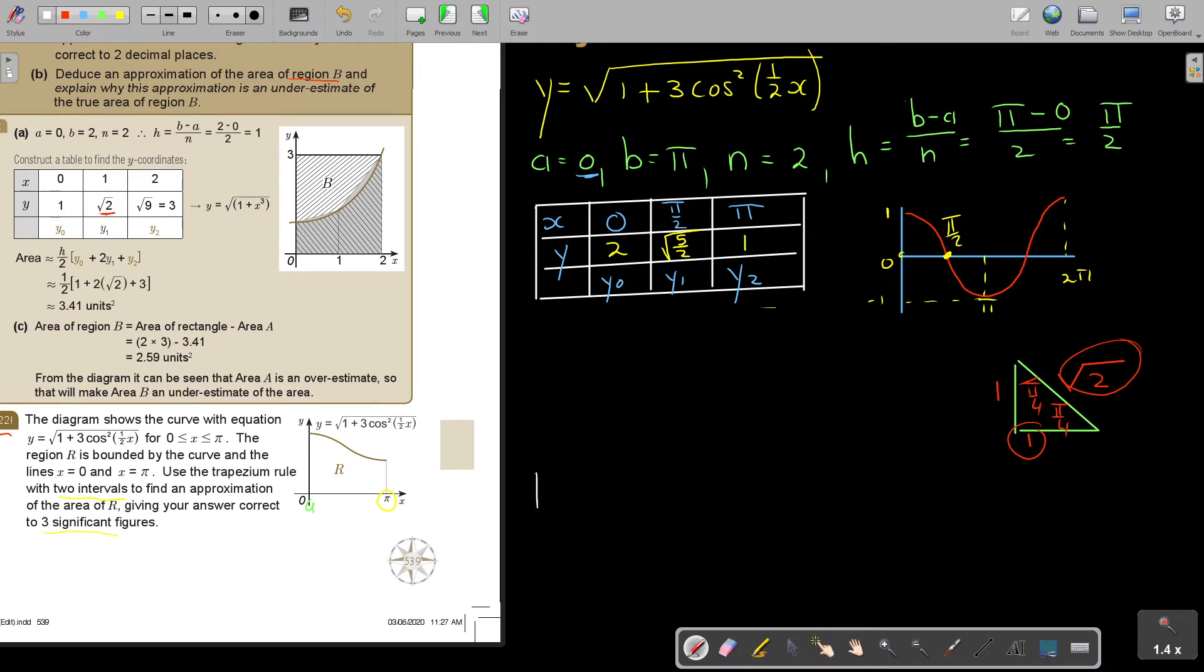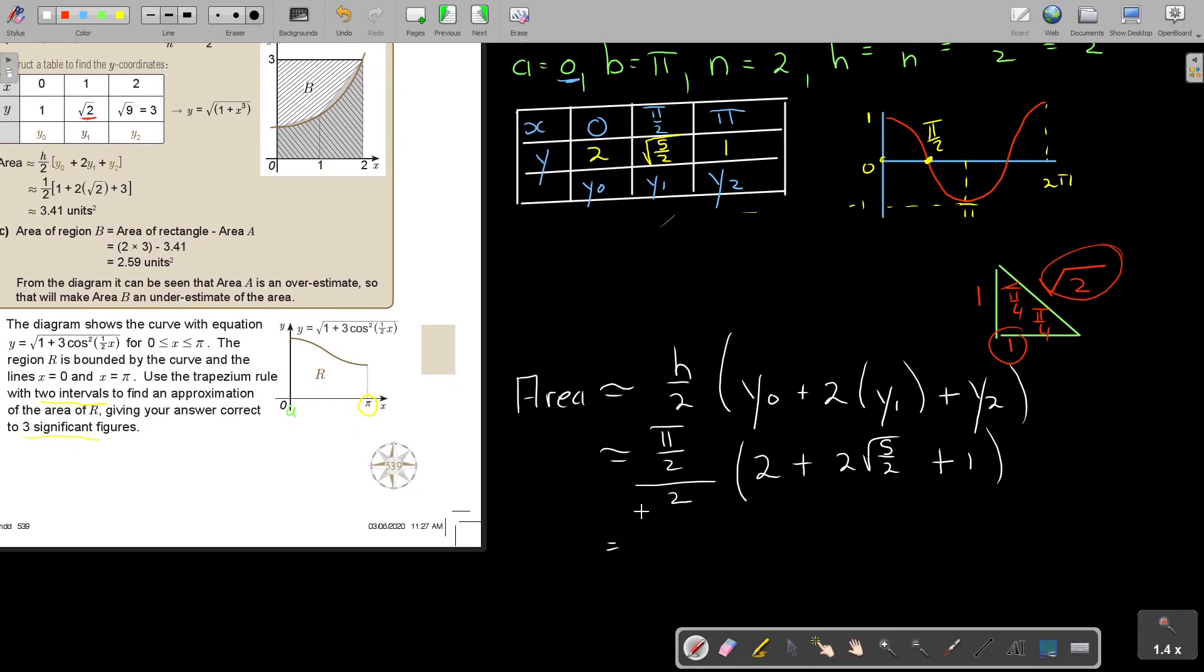So the area, it's approximation, and I'm just going to write the formula down. It's h over 2, and then it's going to be y0 plus the middle one twice, and this is only 1, plus the y2. So h is pi over 2, over 2. So what is y0 in this case? So it's just going to be 2 plus 2 square root 5 over 2 plus 1. And that is going to be pi over 2, it's over 1, so multiply 1 over 2, so it's actually pi over 4.